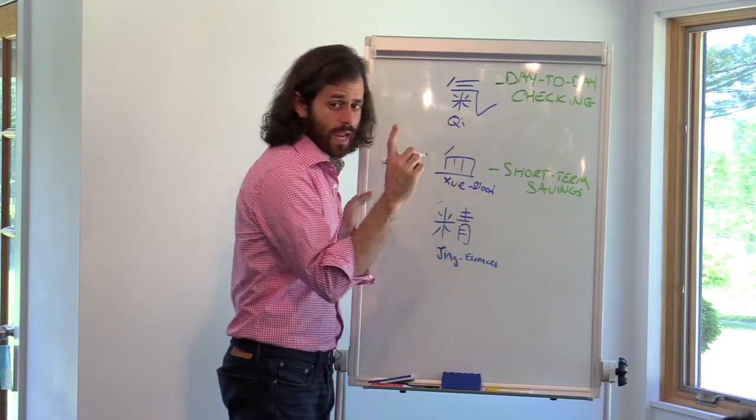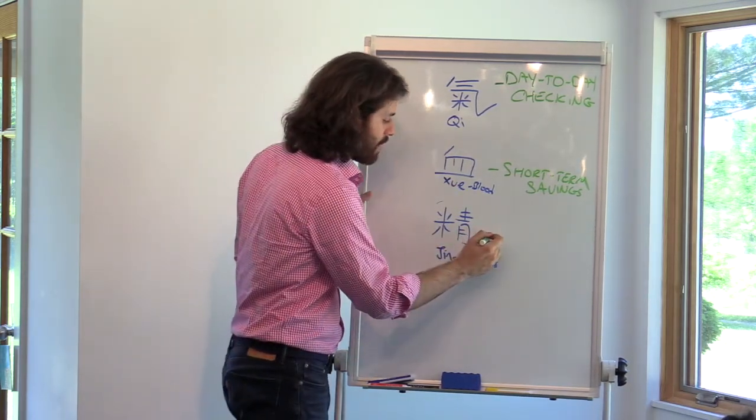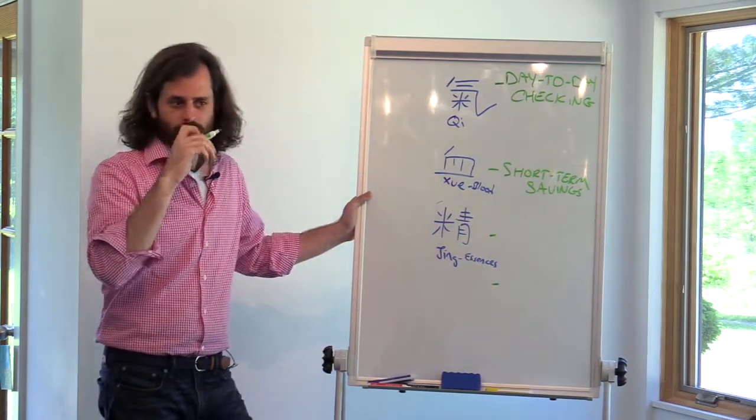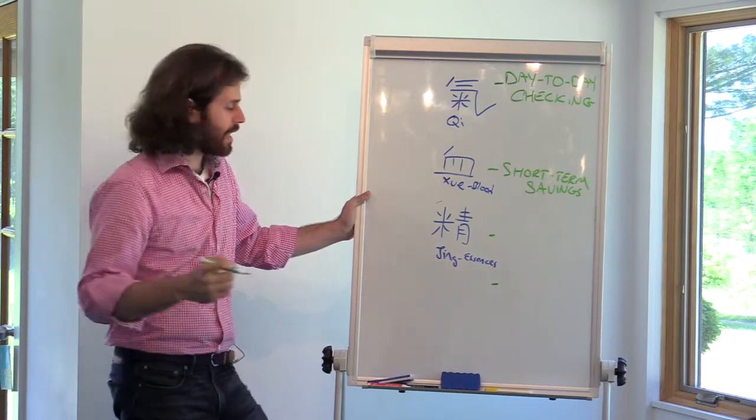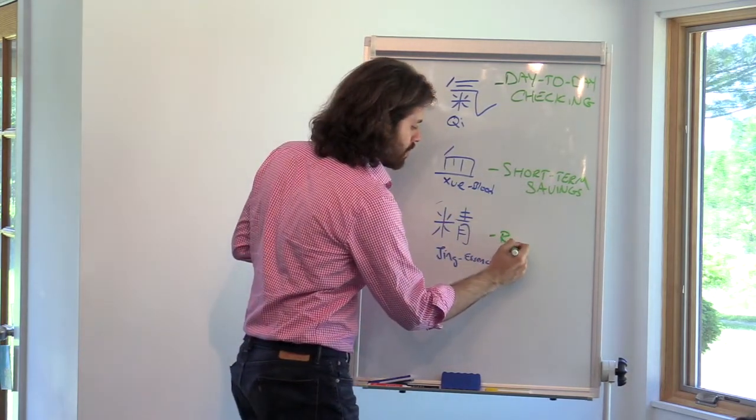And then essence is we have two types of deeper savings. And you know this. What are the two types of long-term savings accounts you can have? A retirement account. Excellent. We'll say this is your retirement account.